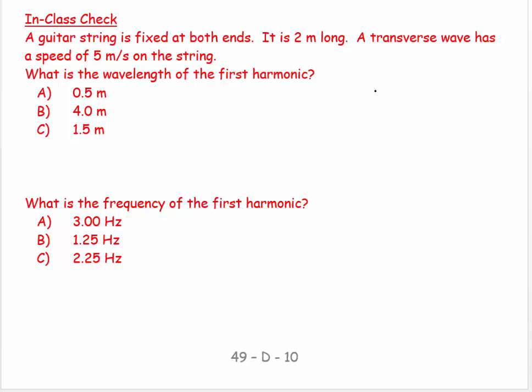A guitar string is fixed at both ends. It's 2 meters long. A transverse wave has a speed of 5 meters per second.